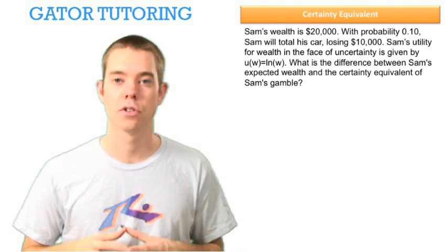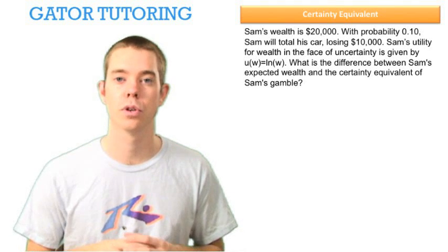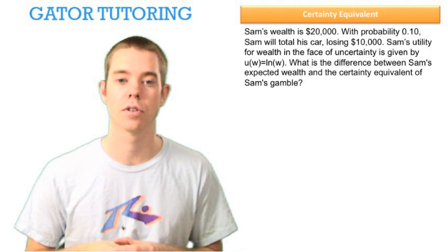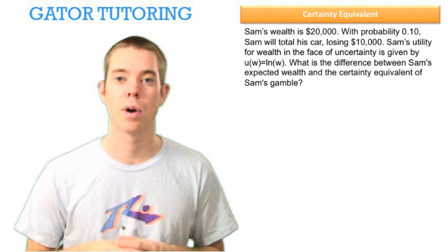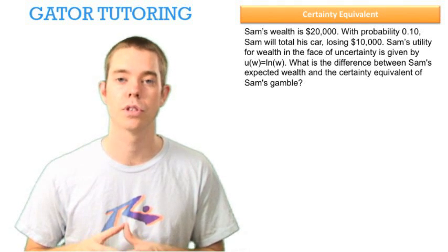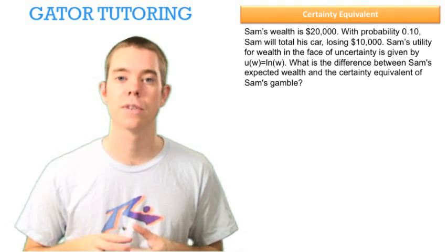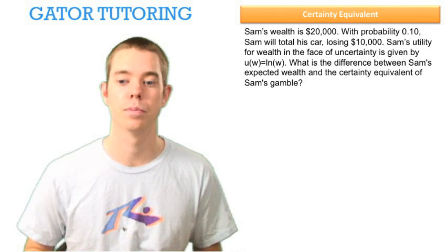Sam's wealth is $20,000. With probability 10%, Sam will total his car, losing $10,000. Sam's utility for wealth in the face of uncertainty is given by U of W equals the natural log of W. The question asks: what is the difference between Sam's expected wealth and the certainty equivalent of Sam's gamble?